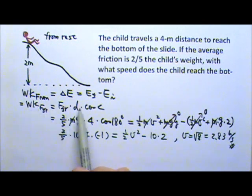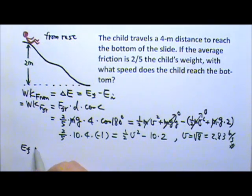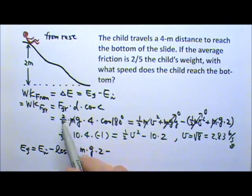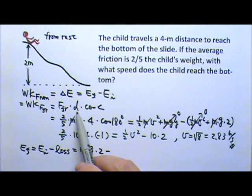Of course, you don't have to use this work energy theorem equation. You can just use the idea of conservation of energy. The energy the child gets at the end is the energy the child has at the beginning minus the loss. And initially, the child was up high, so there is the mgy.